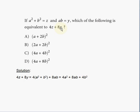So this is a problem asking for the correct use of substitution. 4z plus 8y is equal to 4 times a squared plus b squared, because z is equal to a squared plus b squared, so 4z will be 4 times a squared plus b squared.